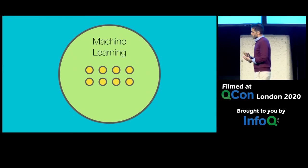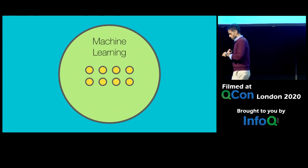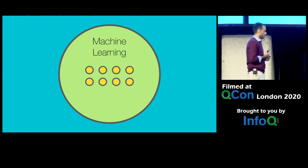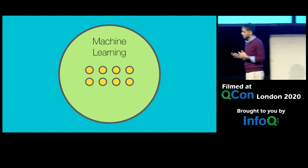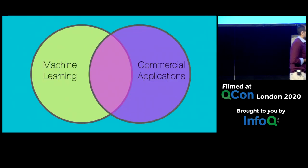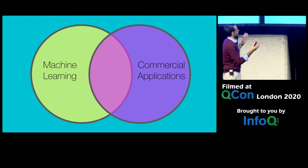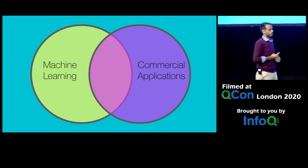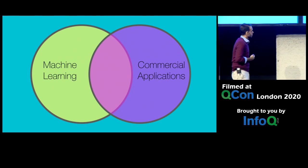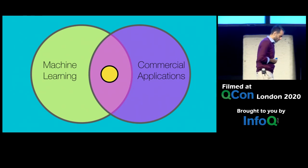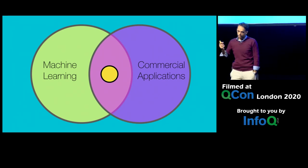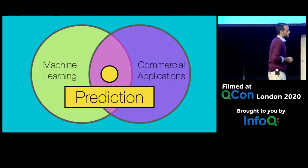When I wanted to learn machine learning, I focused on applications with commercial value — things that would have business applications. I asked: what are the machine learning applications with the most commercial applications? After looking into it myself, I found there is one application of machine learning that is the most commonly used in all of commercial applications, and that is the concept of prediction.